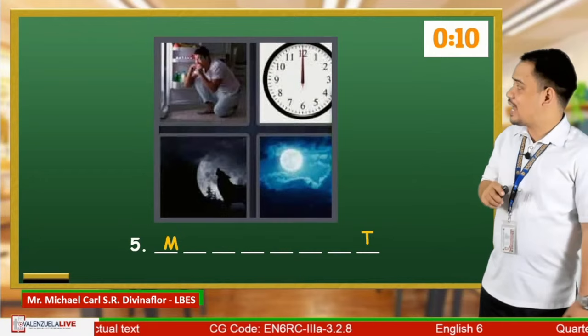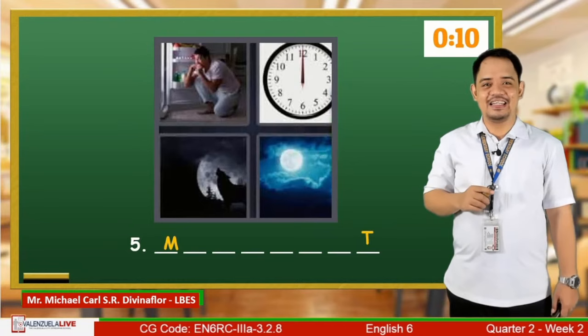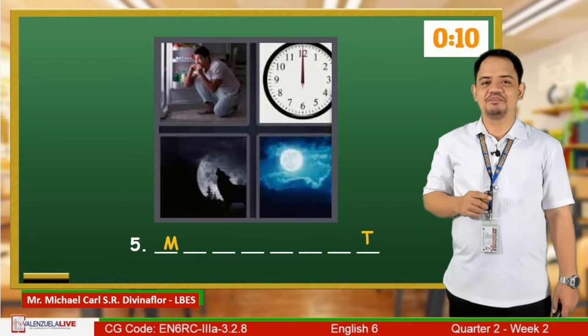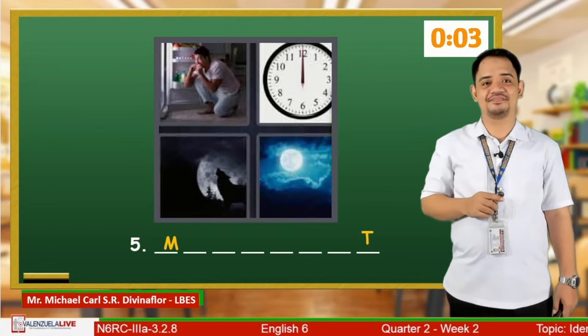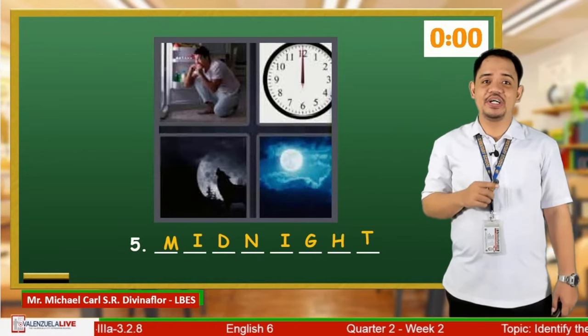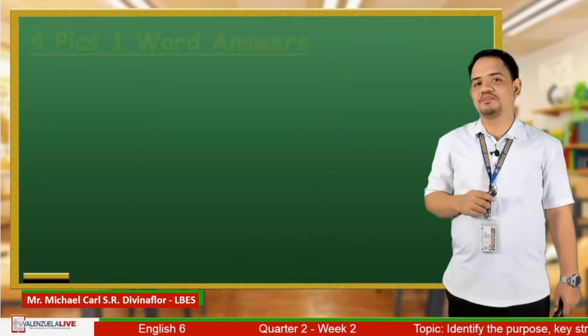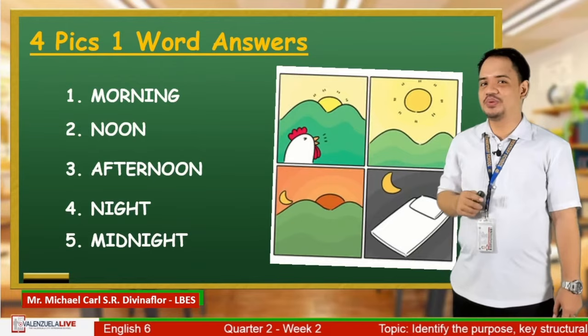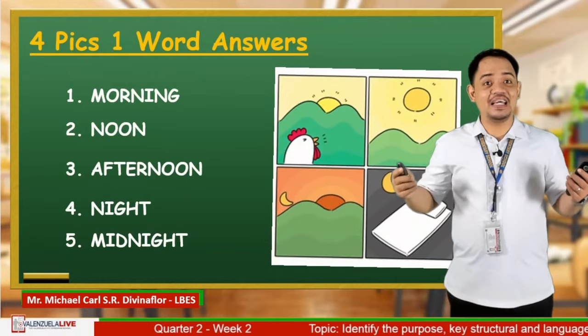Let's get the last word, shall we? The last set of pictures are a guy eating in the dark, a clock pointing at midnight, a wolf howling in the night, and the moon glowing brightly in the night sky. What do you think is the word we are looking for? You are correct! The word is midnight. So the words we got are: number one, morning; number two, noon; number three, afternoon; number four, night; and number five, midnight. Amazing!